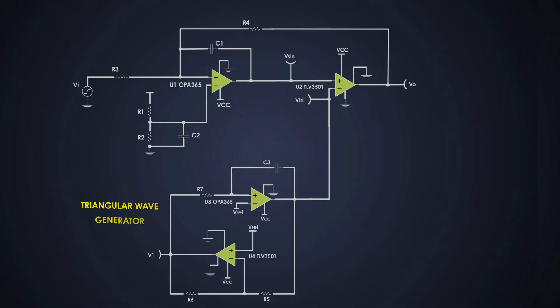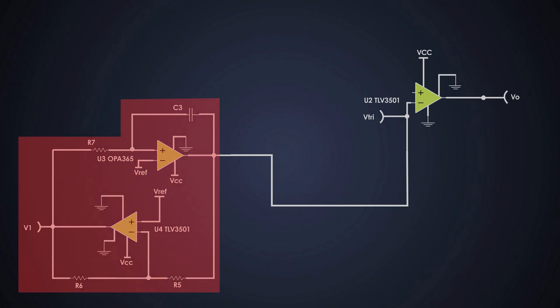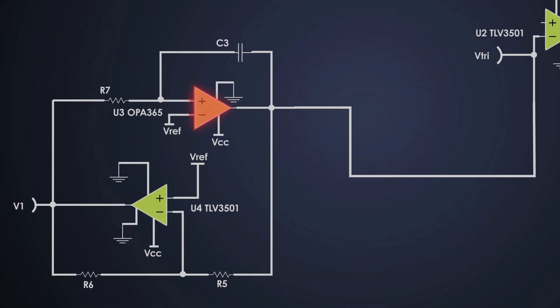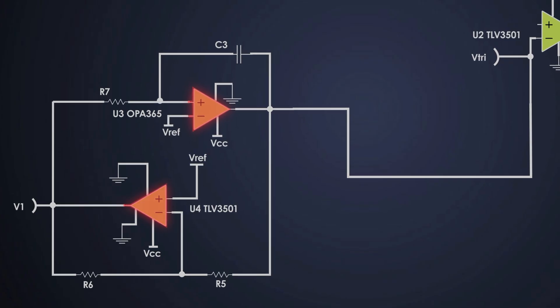First is a triangular wave generator. Here, we use two op-amps. One is a fast comparator and an integrator which integrates the square wave coming from this comparator into a triangular waveform signal. So, we use U3 for the integrator and U4 for the square wave generator.